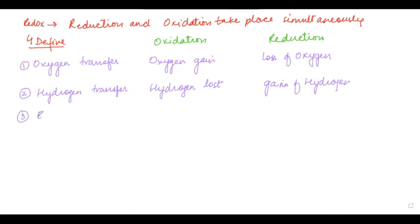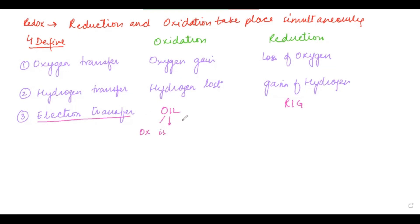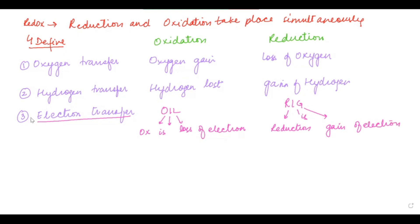The third definition is on the basis of electron transfer. We have mnemonics: OIL and RIG. O stands for oxidation, I for is, L for loss of electron — so oxidation is loss of electron. R stands for reduction, I for is, G for gain of electron — so reduction is gain of electron. They are opposite to each other.